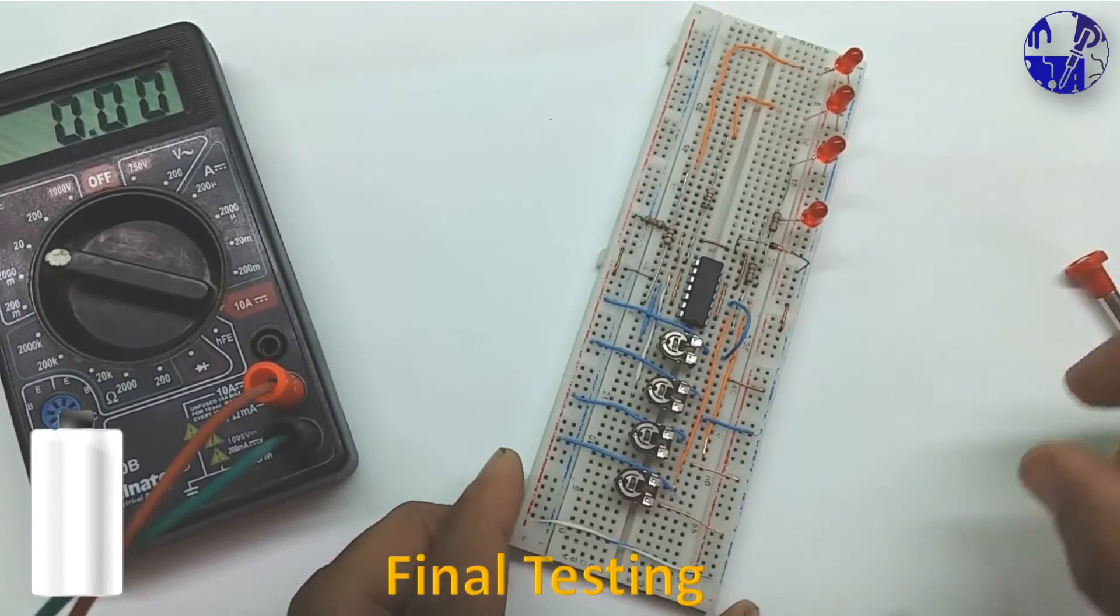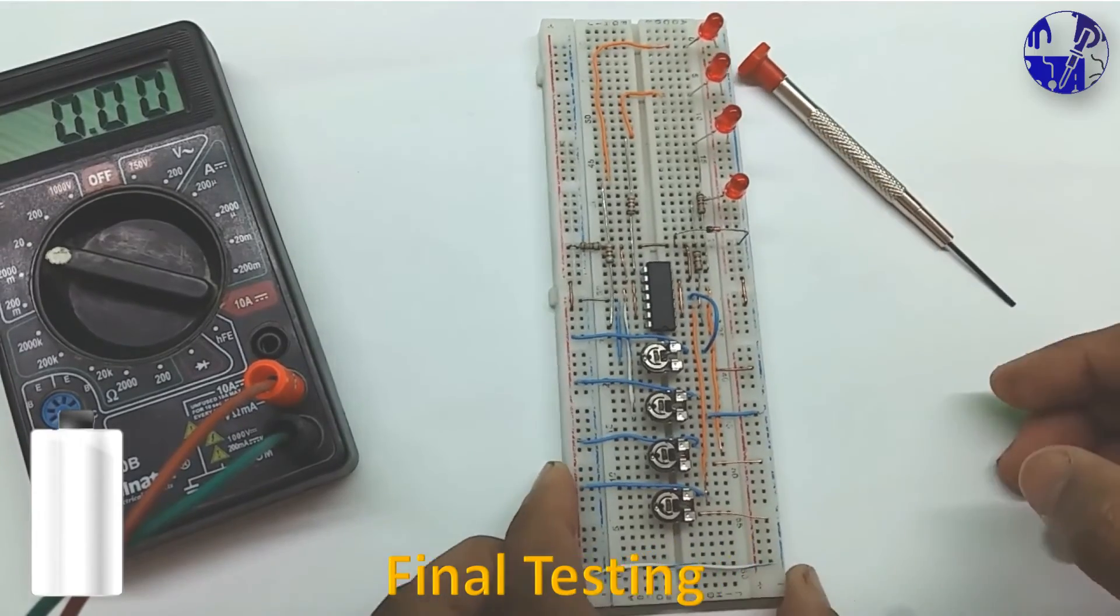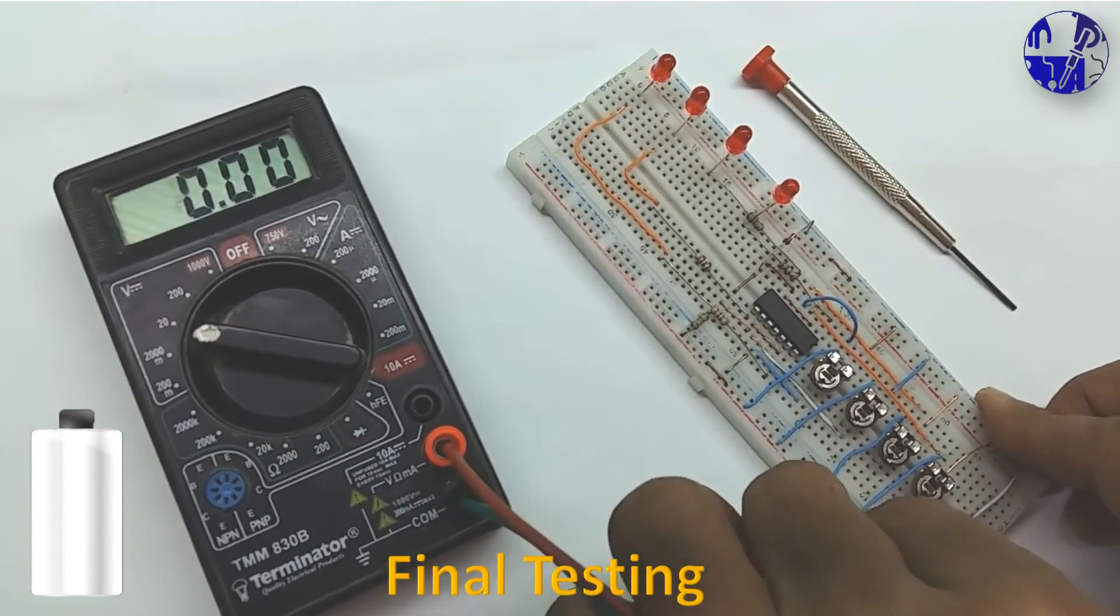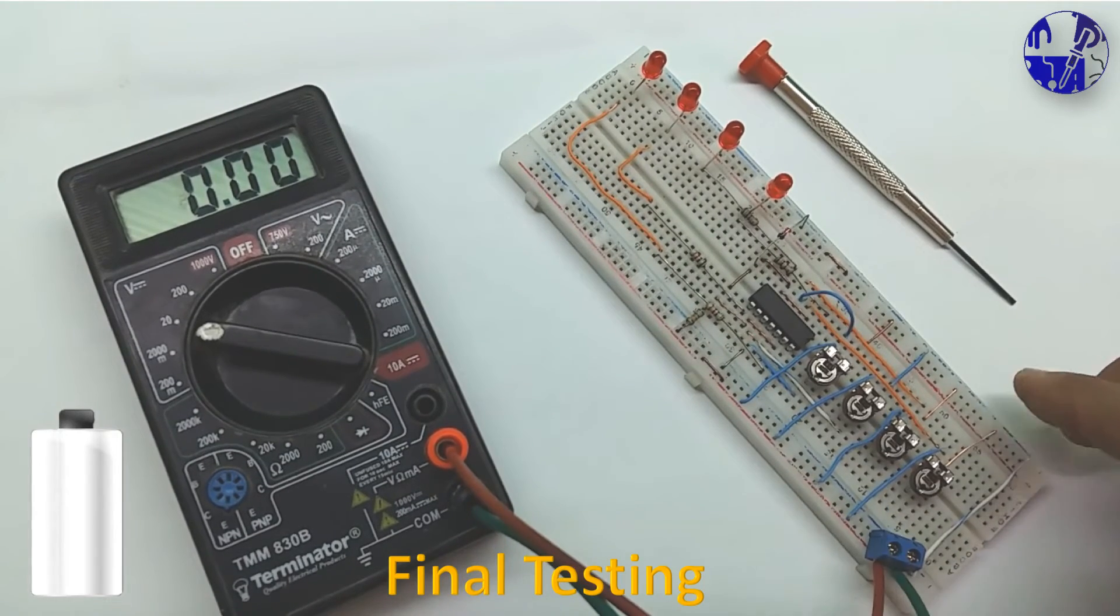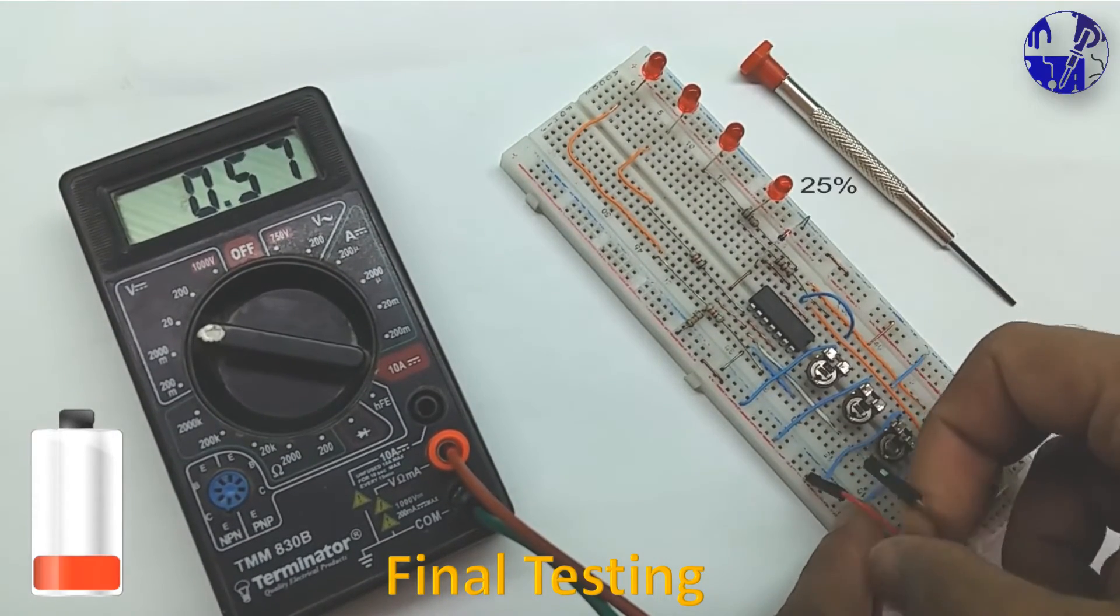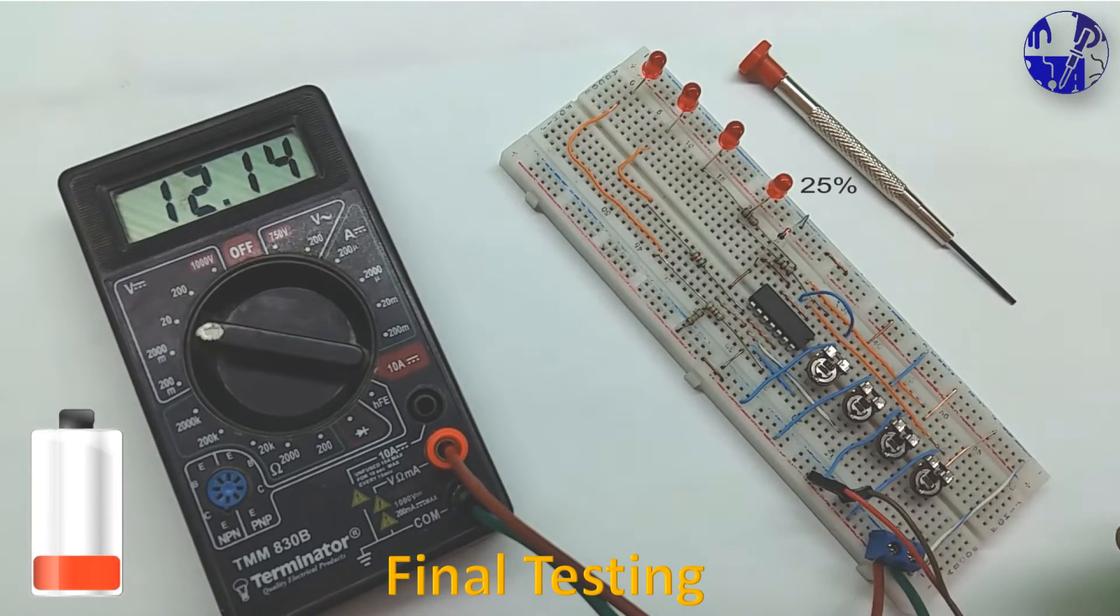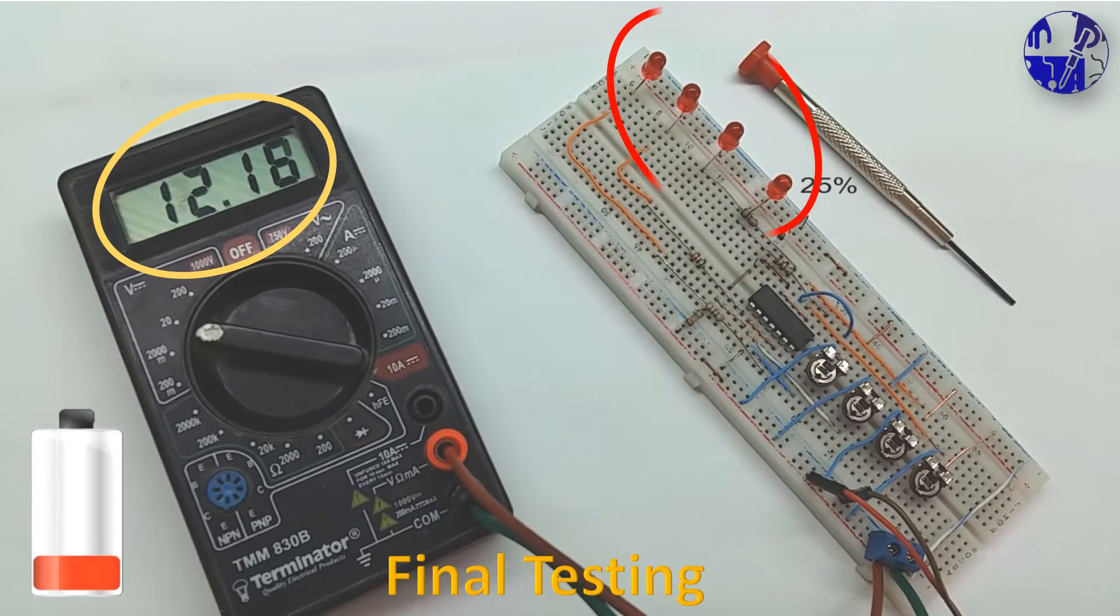Now that the voltage calibration is complete, it is time to test the battery level indicator with the variable power supply. Replace the battery with the variable power supply to observe the battery's behavior at different voltage levels. As evident, with increasing voltage the LED indicators are illuminating at the preset voltage levels.